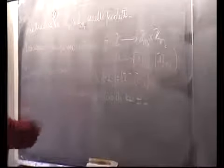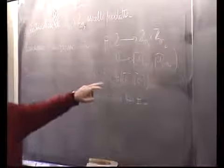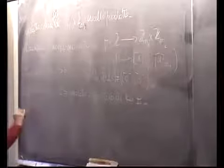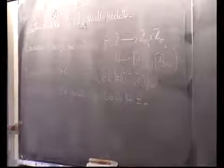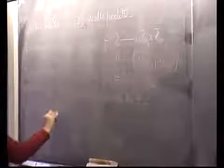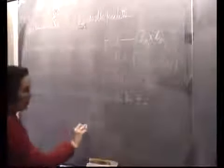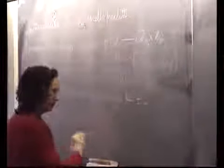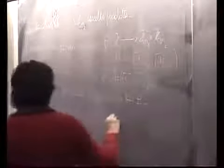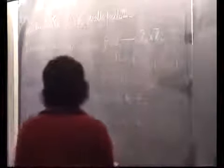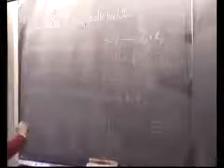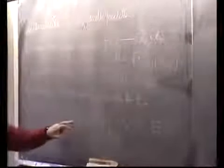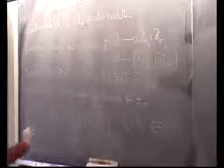D volte l'identità vuol dire sommo l'identità D volte con se stessa: faccio la somma sul primo elemento della coppia, faccio la somma sul secondo elemento della coppia, e trovo — con pedici n1, n2 — che viene classe di D, classe di D, e questo deve essere classe di 0, classe di 0. In Zn1 per Zn2, la classe di D è la classe di 0 in Zn1 vuol dire che n1 divide D, e la classe di D è uguale alla classe di 0 in Zn2 vuol dire che n2 divide D.